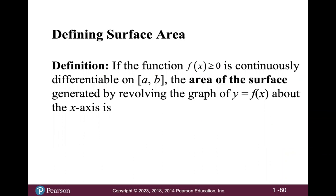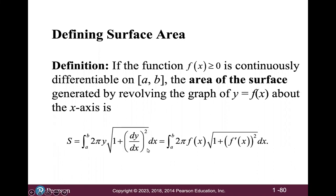And I'll just give you the formula. So if the function f of x greater than or equal to 0 is continuously differentiable on the closed interval from a to b, then the area of the surface generated by revolving the graph of y equals f of x about the x-axis is given by this formula. And again, there are two different ways to write it. So you can either write it the integral from a to b of 2 pi y times the square root of 1 plus dy dx squared with respect to x. So that would be Leibniz's notation. Or the integral from a to b of 2 pi times f of x times the square root of 1 plus f prime of x squared with respect to x. So that would be Newton's notation.